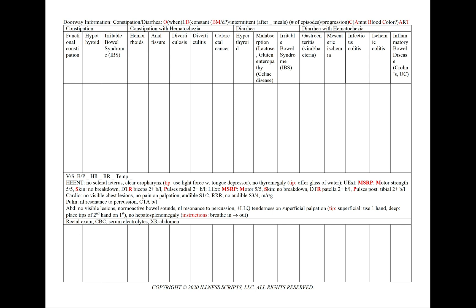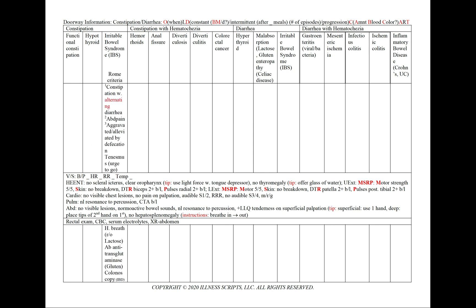In functional constipation, our supporting points include constipation, typically defined as less than three bowel movements per week, and straining. We'll add a colon transit study to our workup. In hypothyroidism, we'll see constipation, weight gain, cold intolerance, and fatigue. We'll add a TSH and T4.